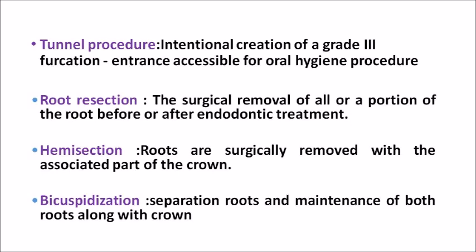Root resection is the surgical removal of all or a portion of the root before or after endodontic treatment — surgically removing a root or a portion of a root. Hemisection: roots are surgically removed with the associated part of the crown. In root resection we are cutting only the root, but in hemisection we are cutting the tooth as a whole into two parts. Bicuspidization: after doing hemisection, if you retain both portions of the tooth it is called bicuspidization — separating the roots and maintaining both roots along with their crowns. If after hemisectioning you choose to remove one part, that remains as a hemisection.